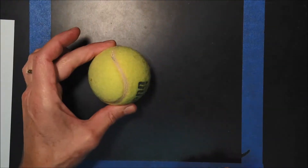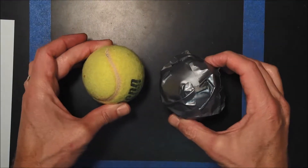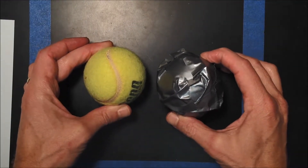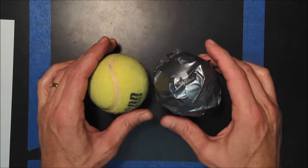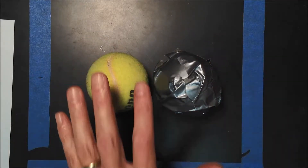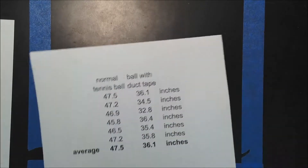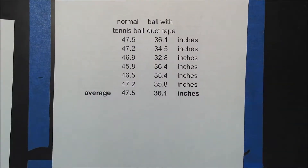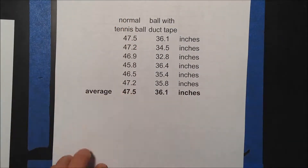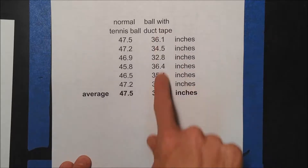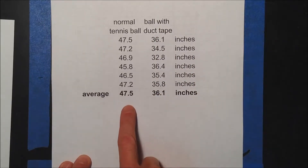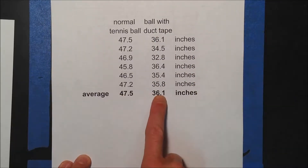So I came up with an example. Let's say we are dropping two tennis balls — a regular tennis ball and a tennis ball that is covered in duct tape. We drop them both from the same height and record how high they bounce on the first bounce. This is the data that we got: the normal tennis ball and the ball with duct tape, all in inches. The average of the normal ball is 47.5 and the ball with the duct tape is 36.1.